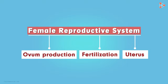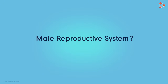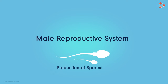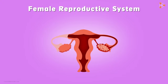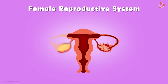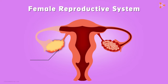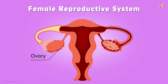Do you remember where we began studying the male reproductive system? Yes, it was the site of sperm production. Similarly, we will begin learning from the site of production of the egg cell, or simply the ovum. So the journey begins from these oval structures called the ovaries, one ovary on either side.